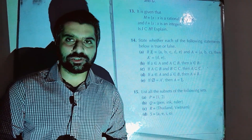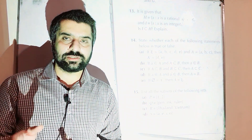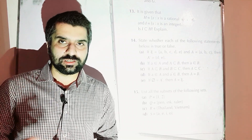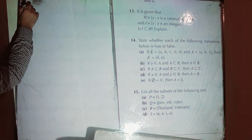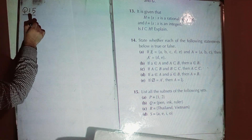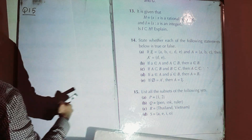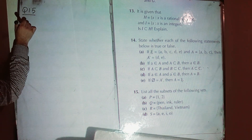In this video, we are going to solve question number 15 from Exercise 14B, D2 7th edition. The question is regarding subsets — how to write subsets of a given set and how many subsets a set may have. Question number 15 says: list all the subsets of the following sets.